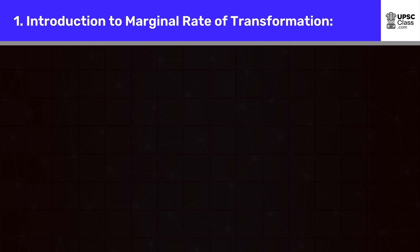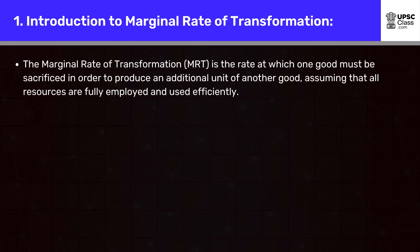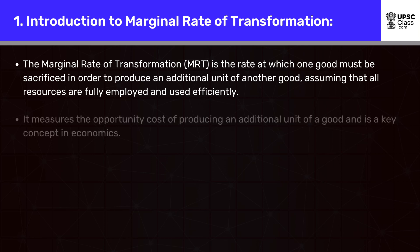The marginal rate of transformation, MRT, is the rate at which one good must be sacrificed in order to produce an additional unit of another good, assuming that all resources are fully employed and used efficiently. It measures the opportunity cost of producing an additional unit of a good and is a key concept in economics.